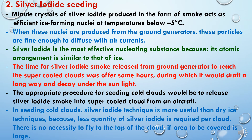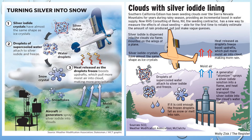Silver iodide requires less quantity per cloud, and there is no necessity to fly to the top of the cloud, even if the area to be covered is large. Here we have shown the diagrammatic presentation of silver iodide cloud seeding. Silver iodide crystals have almost the same shape as ice crystals, and droplets of super-cooled water attach to silver iodide and freeze. Aircraft or generators are used to spray silver iodide into clouds. The heat released as droplets freeze boosts updrafts, which pull more moist air into the cloud, making more precipitation. The silver iodide attaches to droplets which then become snow crystals and form as snowflakes. This is a very effective method of cloud seeding.